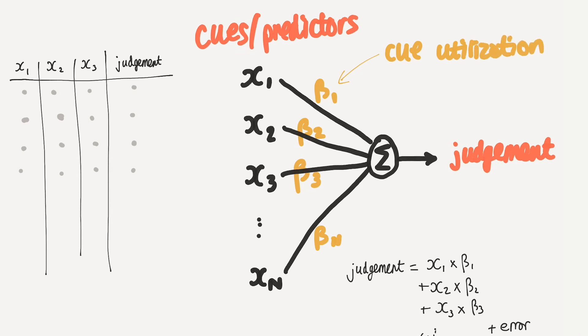So whether you call them, after the statistical name, beta coefficients, or more generally you could call them weightings, equally you could call them cue-utilization. It basically just describes to what extent and how are human judges utilizing each of the predictors.